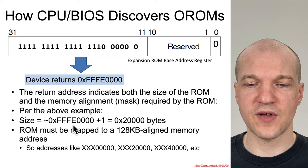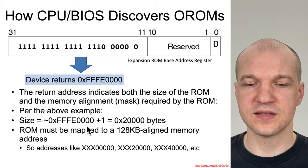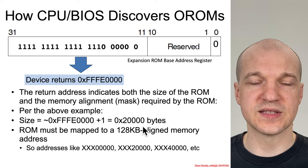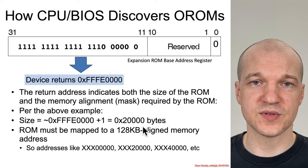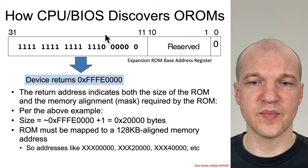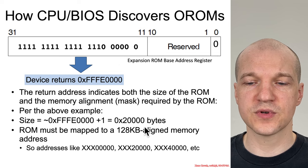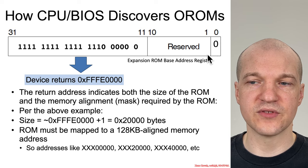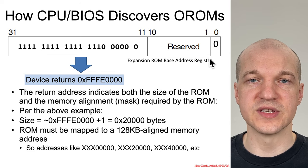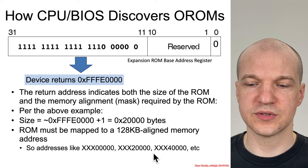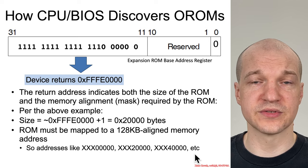For example, if the hardware returns FFFE0000, you flip the bits and add one to determine the size of space being requested. In terms of the actual base address where the ROM is mapped, it must be 128-kilobyte aligned because those 11 bits are all expected to be zero — so the address must start with values like 0000, 2000, 4000, et cetera.